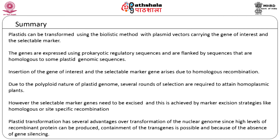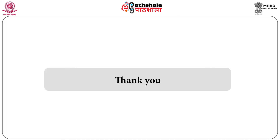Plastid transformation has several advantages over transformation of the nuclear genome, since high levels of recombinant protein can be produced, containment of the transgene is possible, and because of the absence of gene silencing. However, this technology has not yet been applied for improvement of agronomic traits in any crop plant. Thank you.